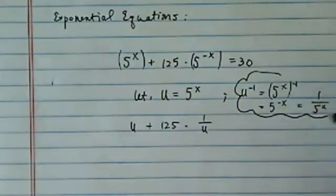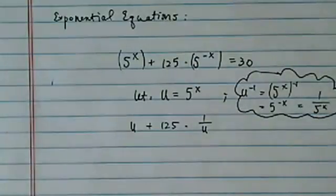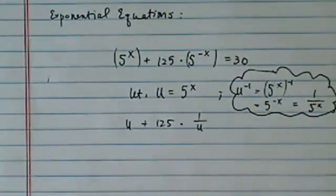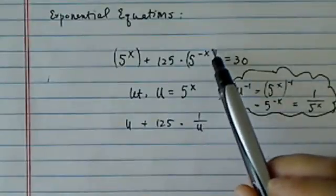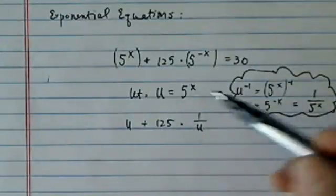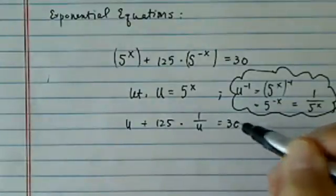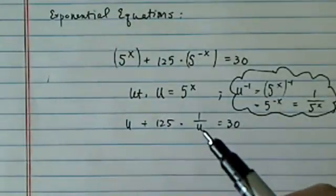This is also equal to 1 over 5 to the x. This is probably one of the most important parts for this particular problem, because unless you recognize 5 to the minus x is really 1 over 5 to the x, you're going to get stuck on this problem. Alright, once we get here, it's pretty easy.